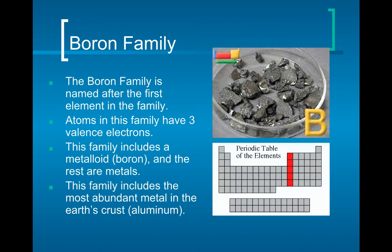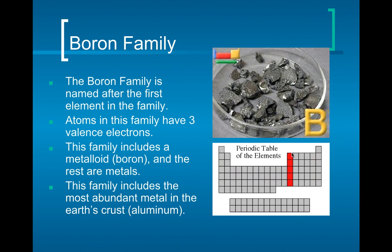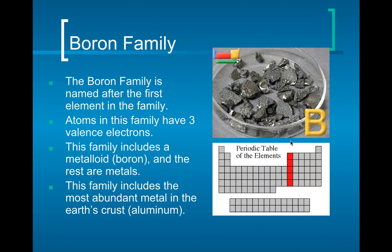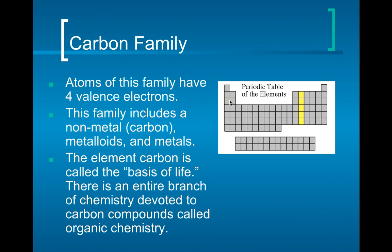The boron family has three valence electrons. So we're seeing a trend: alkali metals have one valence electron, alkaline earth metals have two, boron family has three. The boron family includes metalloids and metals — boron itself is the only metalloid in the family; the rest are metals.